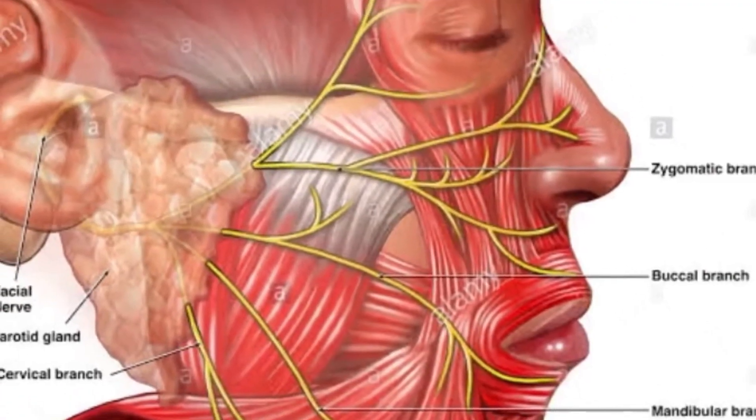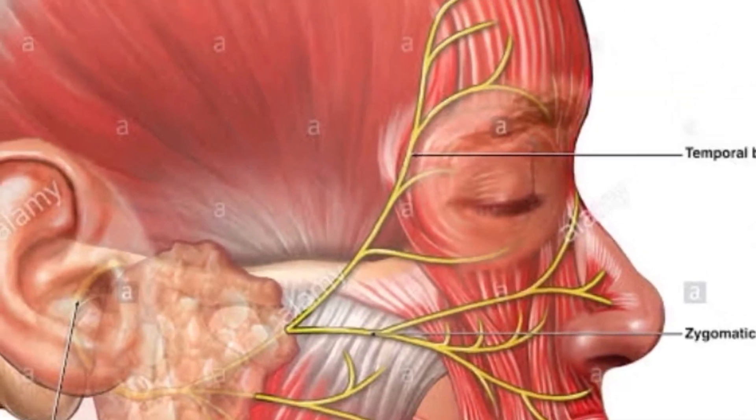Now what do you mean by Bell's phenomenon? When you try to close your eyes with your upper eyelids, your eyeball rolls upwards and outwards and this is called Bell's phenomenon. So this pattern of facial nerve is called pes anserinus. You can see the clinical features of Bell's palsy.